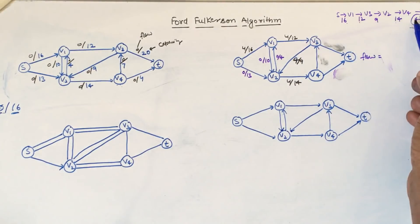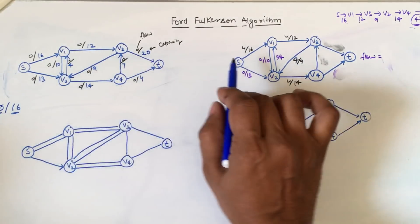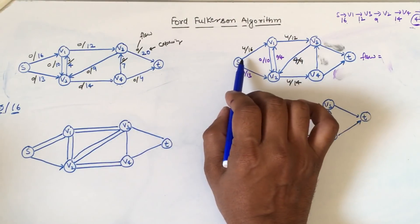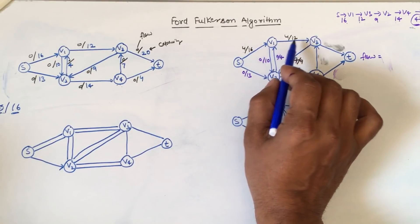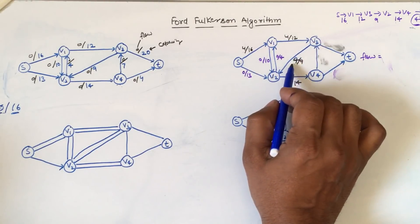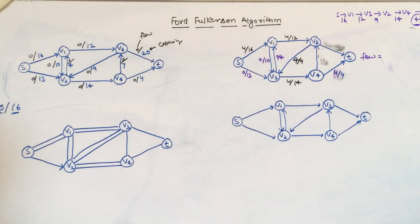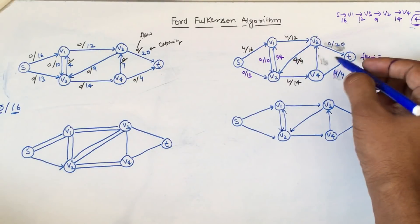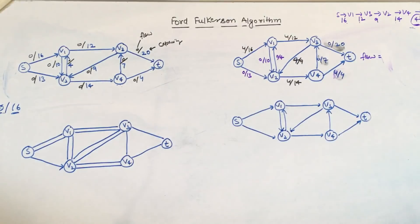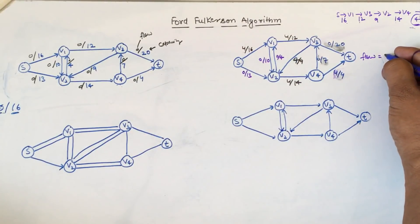We cannot insert more than four units of flow from the source vertex into the network. So we have inserted flow of 4 into the network. The graph after inserting the flow shows 4 units from s to v1, 4 from v1 to v3, 4 from v3 to v2, and 4/4 from v2 to v4 to t. The rest of the nodes have zero flow. The current flow in the network is 4.